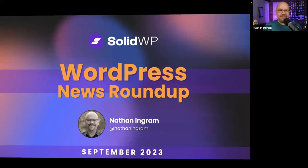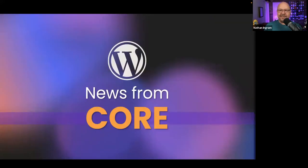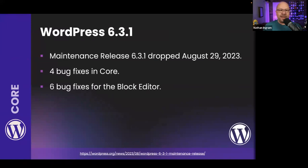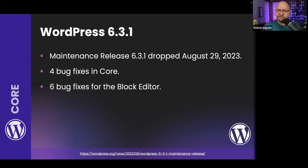Let's get started with news from core WordPress. WordPress 6.3.1 dropped back on August 29th — four main bug fixes in core, six bug fixes in the block editor. It was a short-cycle maintenance release with no real issues. That will possibly be the only 6.3.x release unless something comes up; I don't think anything else is planned.